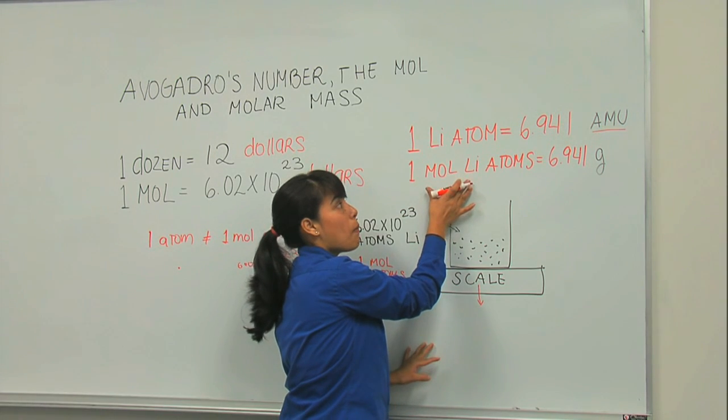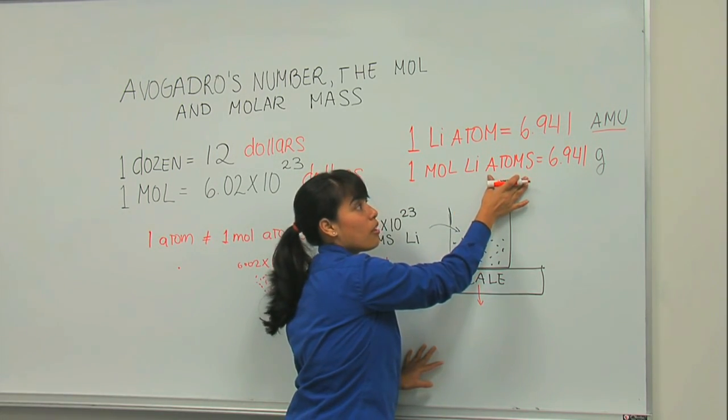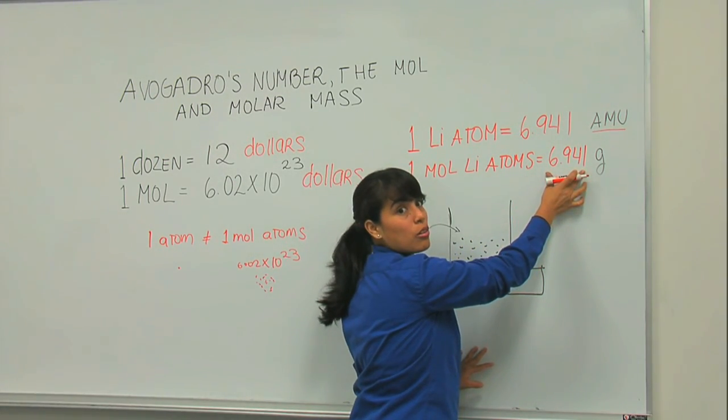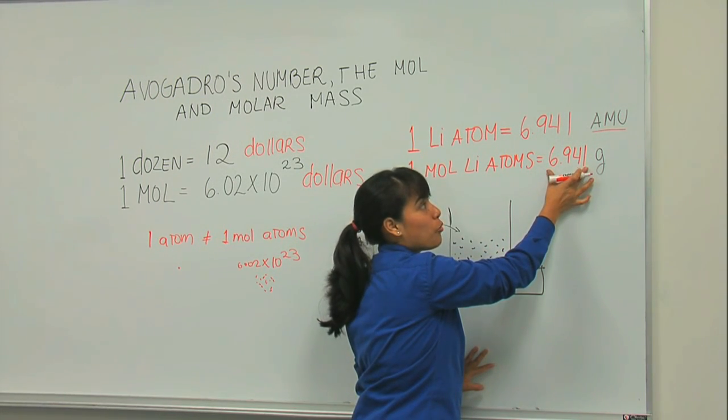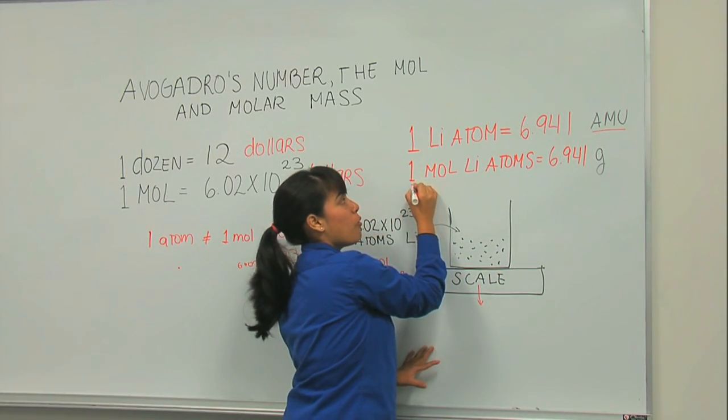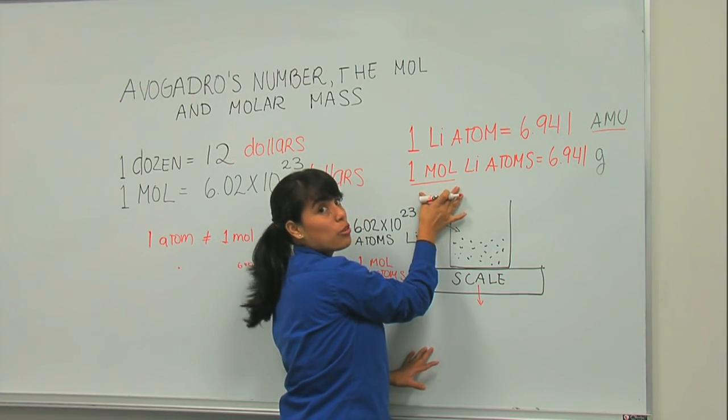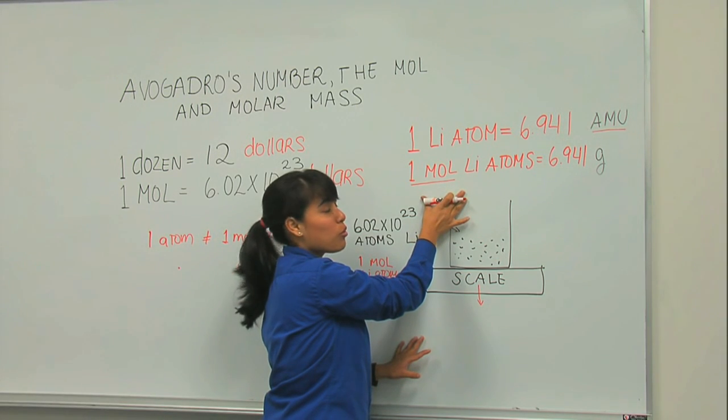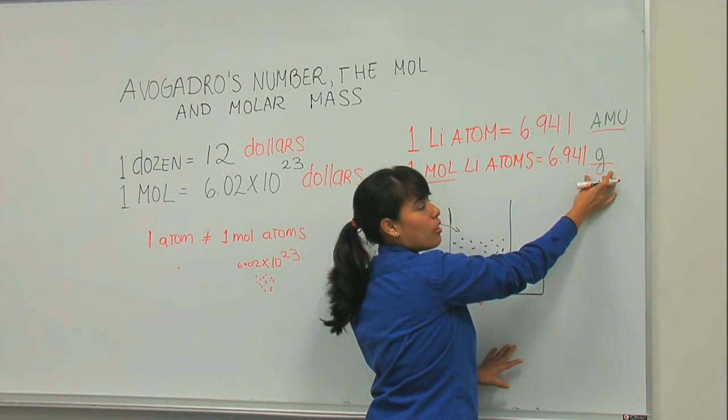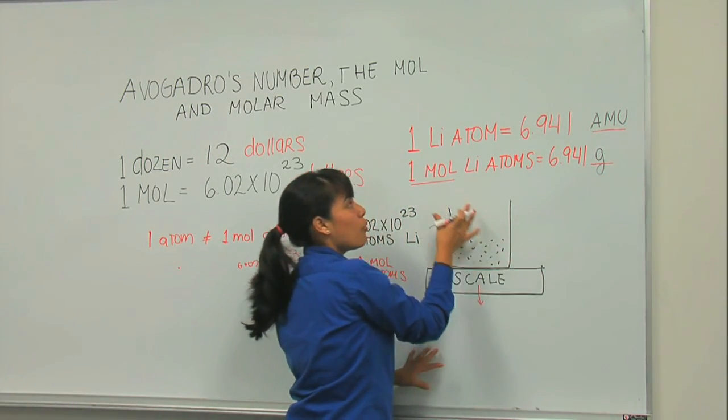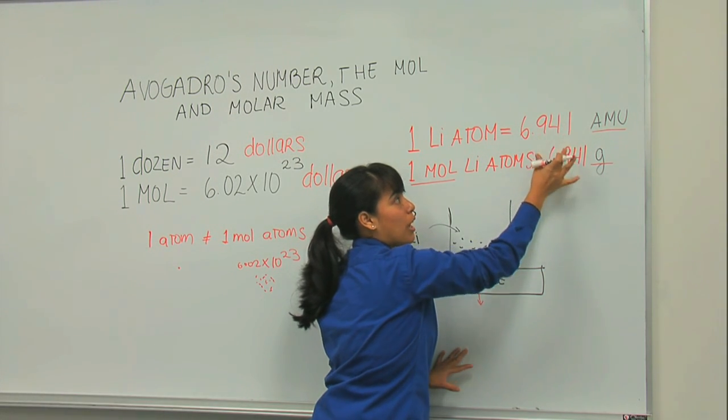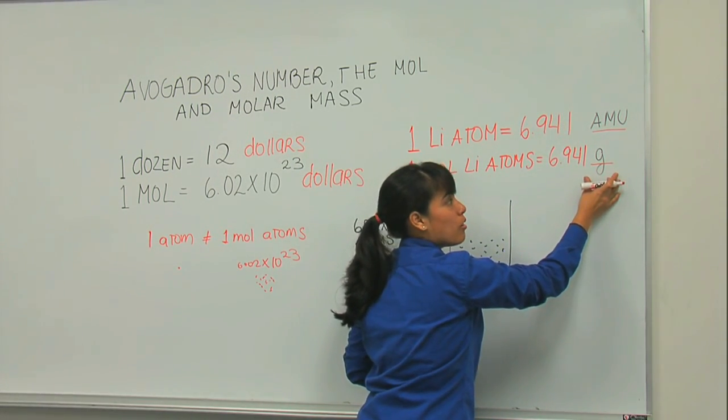Now what's the molar mass? I mean the mass of one mole of lithium atoms. Very easy. You just go to your periodic table and you read the numerical value of the mass number. And that's 6.941. So that will be your molar mass. But because we're talking about something very big as one mole, one mole is not one atom. One mole is 6.02 times 10 to the 23 atoms. So your units have to be very big as well. And the unit is grams.